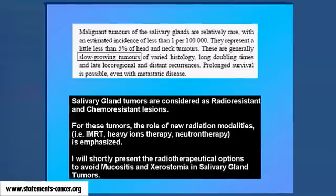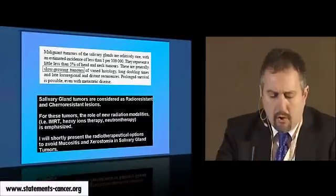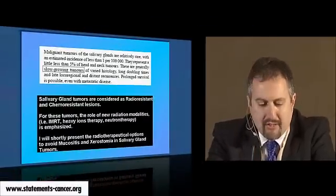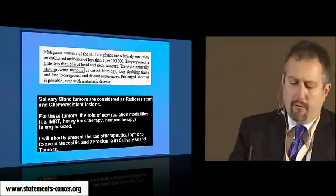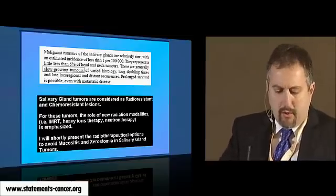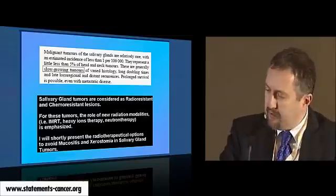Malignant tumors of the salivary glands are relatively rare. We estimate incidence of less than 1.1 per thousand. They represent a little less than 5% of head and neck tumors, and these are generally slow-growing tumors of varied histology. They are a heterogeneous set of tumors with minor salivary glands, major salivary glands, and some glands disseminated all along the upper aerodigestive tract, with quite a lot of tumor cell types like cystic adenoid carcinoma, adenocarcinoma, etc.